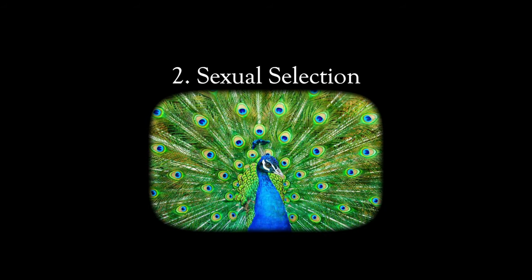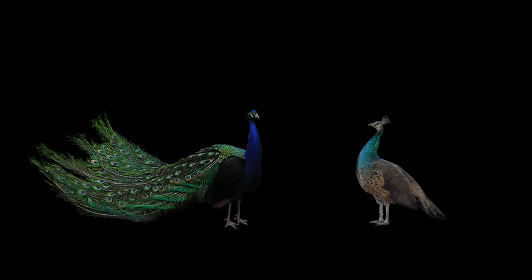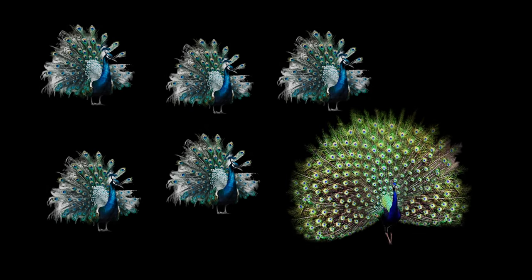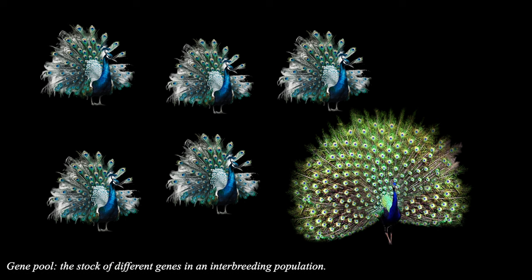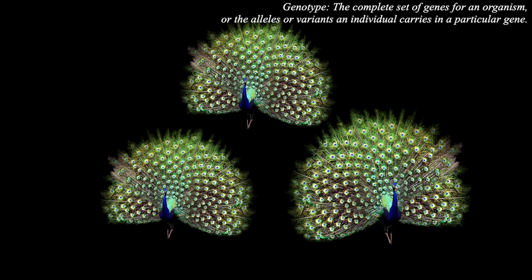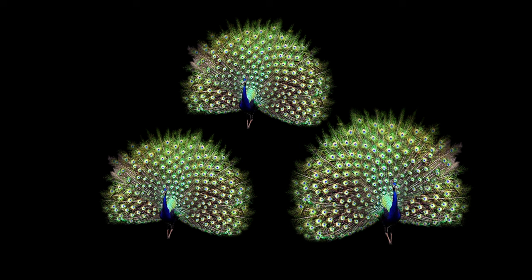Sexual selection is the process of animal species choosing to mate with members of a species which possess desirable traits. For example, a female peacock is attracted to the elaborate feather displays of a male peacock. These traits are the result of genetic mutations, and if they are favored by the female of the species — in this case a female peacock — the females will mate with the males with the most attractive display. This causes these traits to prevail in the gene pool. Peacocks born with genotypes for less elaborate displays are not favored by the females, and so their chance of reproduction and passing on these genes are low.